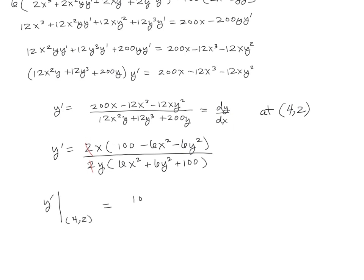And that's going to be equal to 100. Don't forget, we have the x multiplied. So 100 minus 6 times 4² minus 6 times 2², and that whole thing is times 4. And then down below, we're going to have 6 times 4² plus 6 times 2² plus 100, and that is times the y, which is 2.